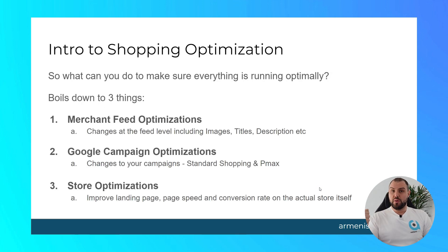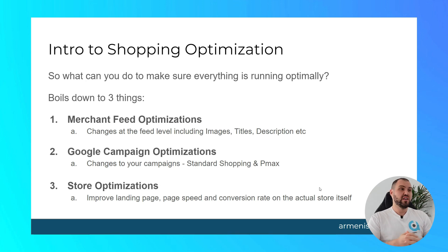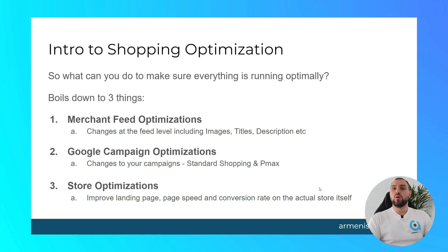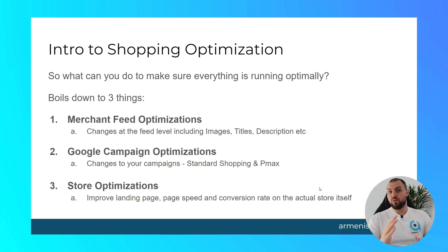Here's an introduction to optimization for shopping. It boils down to three things: merchant feed optimization — things that happen at the merchant center or feed level; Google campaign optimizations — what can we do within Google Ads Manager, including both standard shopping and Pmax; and store optimizations — improving our landing page, page speed, and conversion rate. The third one is not my area of deep expertise, so that will be in a later video. This video focuses on merchant feed optimizations.